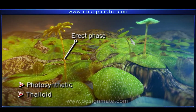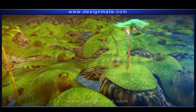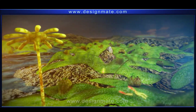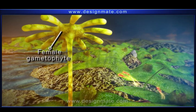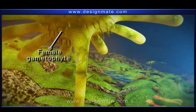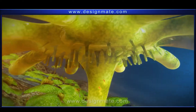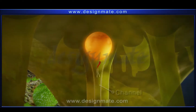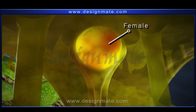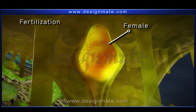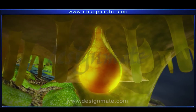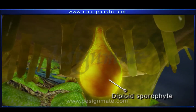The male gametophyte produces the sperms, or antherozoids, which travel to the female gametophyte through the medium of water. A closer look at the female gametophyte shows the male sperms traveling through the channel and fusing with the female ovum. This is called fertilization, which forms the diploid zygote.